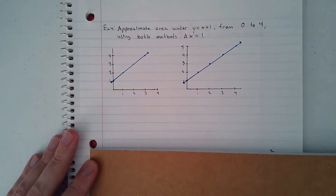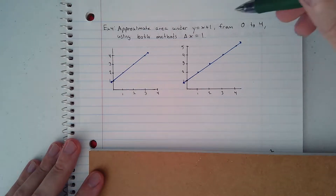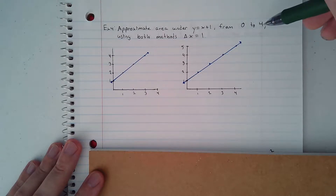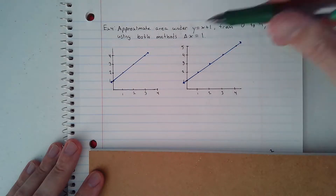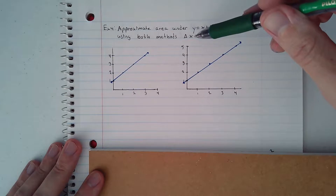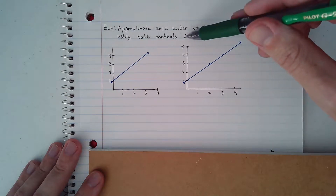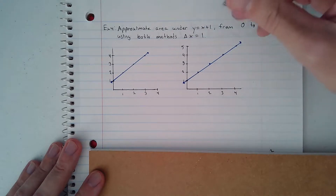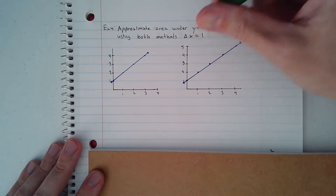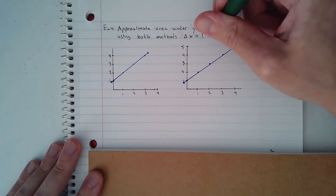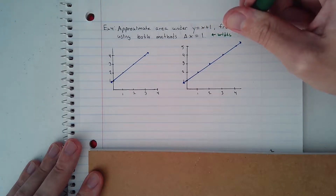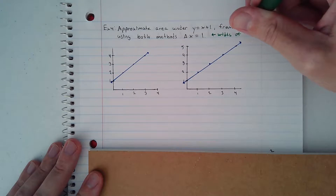In example 4, we're going to approximate the area under y equals x plus 1 from 0 to 4 using both methods, where delta x equals 1. Delta x is the change in x values, or the width of each rectangle.